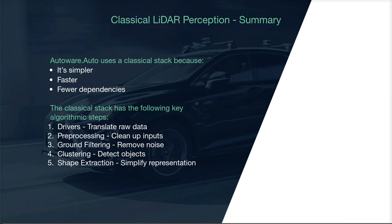So what did we just learn? Artificial intelligence problems typically have two solutions: deep learning-based approaches and classical approaches. The object detection stack in Autoware Auto uses a classical approach because it's simpler, faster, and has fewer dependencies. The classical object detection stack in Autoware Auto encompasses both the sensing and understanding portions of an autonomous system. The sensing aspect consists of sensor drivers and common preprocessing, whereas the understanding portion consists of ground filtering, clustering or segmentation, and shape extraction. In the next section, we'll start going down the object detection stack, first talking about preprocessing.